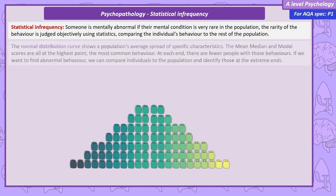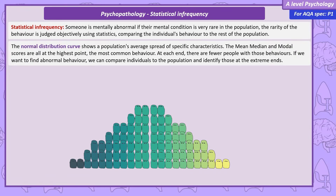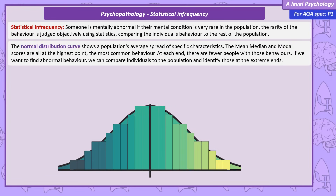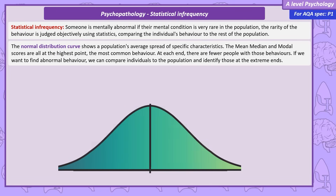For example, we can use a normal distribution curve to show the average spread of a certain characteristic across a population. Most people will be around the middle, but as we move away from the centre, fewer and fewer people will have those values. If we want to compare an individual's behaviour to the rest of the population, we can use this data to identify those individuals who are most unusual.